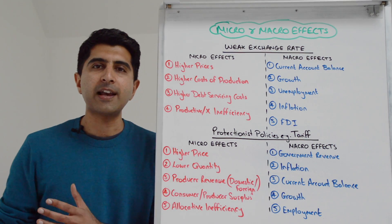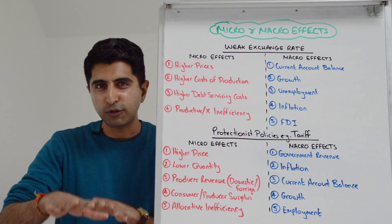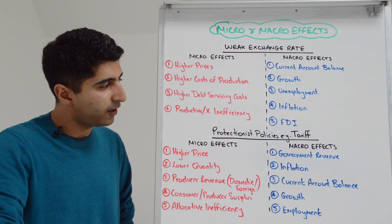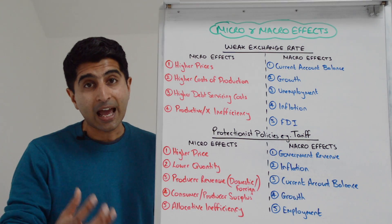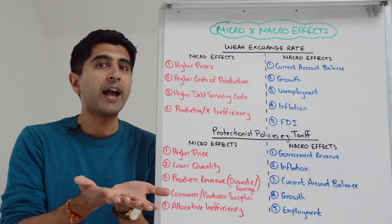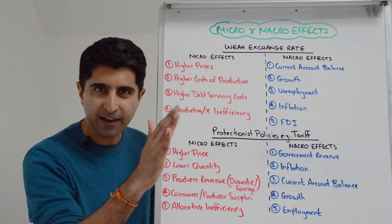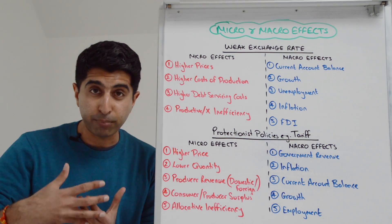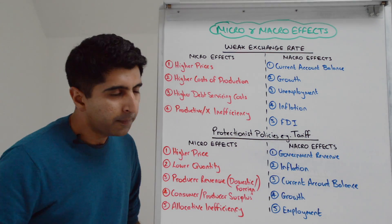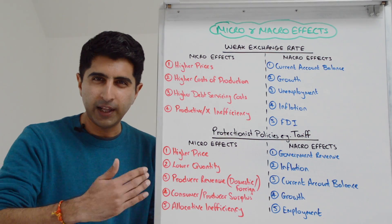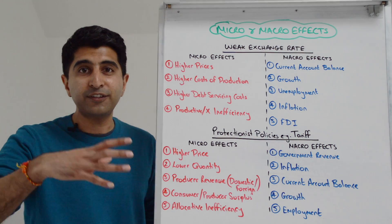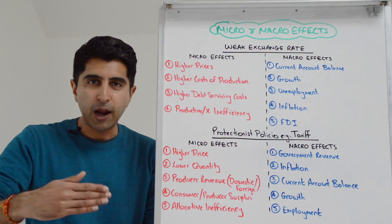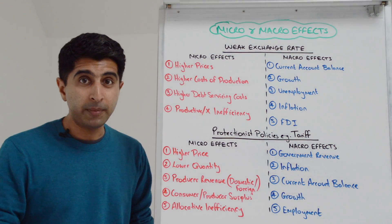On the macro side, we know policies like a tariff can generate government revenue — revenue that can be used to run down budget deficits and national debt, or to fund key government expenditures in certain areas of the economy. Tariffs can also be inflationary: for firms importing goods, there will be a rise in cost of production, linking to SRAS shifting left and higher cost-push inflation. In theory, a country's current account balance could improve with protectionist measures like a tariff by constraining import expenditure. Going one stage further and assuming export revenue stays the same, there is a link to higher net exports in the AD equation, higher AD, higher growth, and lower unemployment.